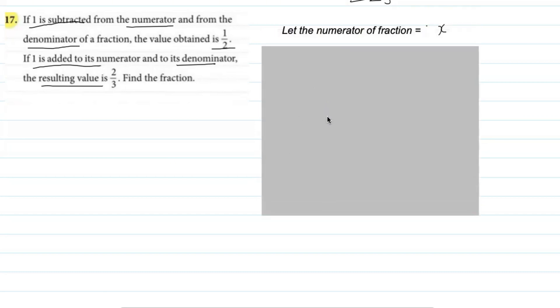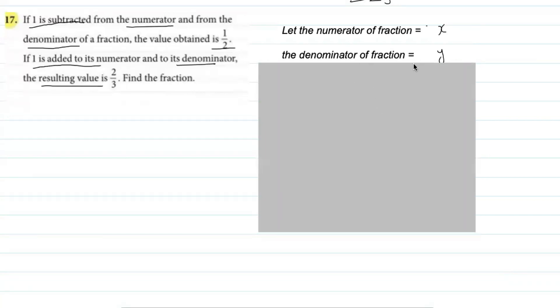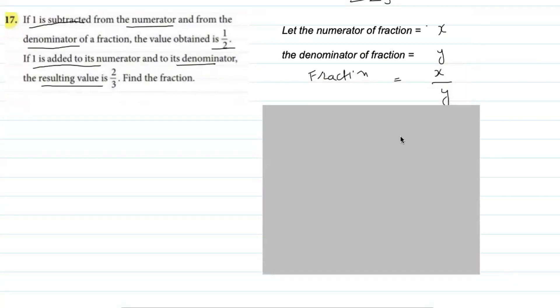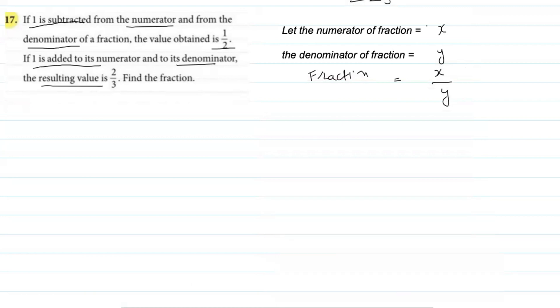Here we need to calculate the fraction. The numerator and denominator are not given. So I suppose the numerator equals x and the denominator equals y, making the fraction x/y. The condition is: if one is subtracted from the numerator and denominator, the new fraction (x−1)/(y−1) = 1/2.